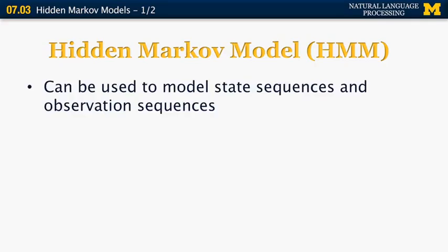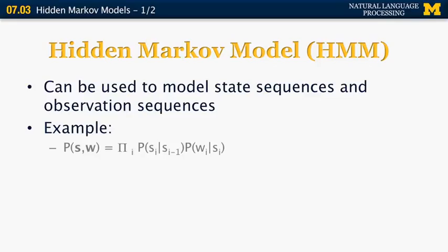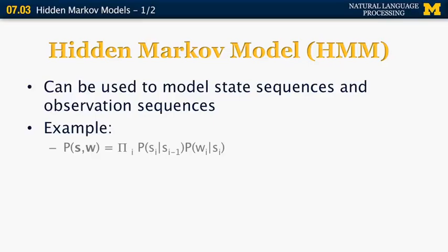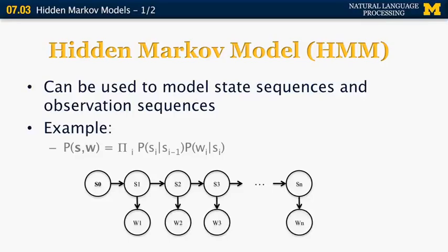HMMs are used to model state sequences and observation sequences. We want to find the probability that a certain set of states is correlated with a certain set of words. In a background model, this is the product of the transition probabilities of going from one state to the next, times the probability of emitting symbol w_i when in state s_i. So the sequence of states is s0 to sn, and when in state i, we produce word w_i as output.